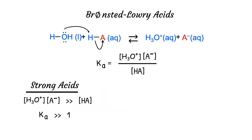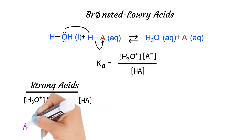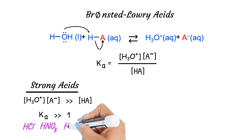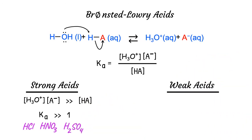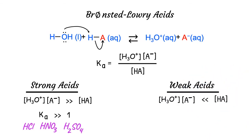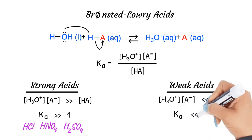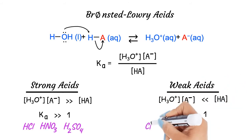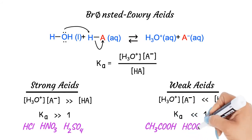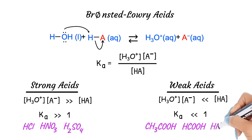Thus the Ka will be larger than one. Examples of strong acids are hydrochloric acid (HCl), nitric acid (HNO3), and sulfuric acid (H2SO4). On the other hand, weak acids dissociate only partially in aqueous solutions — they are reactant-favored, so the concentrations of products are much smaller than those of reactants, and Ka is less than one. Examples of weak acids are carboxylic acids such as acetic acid (CH3COOH) and formic acid (HCOOH), as well as nitrous acid (HNO2) and hydrocyanic acid (HCN).